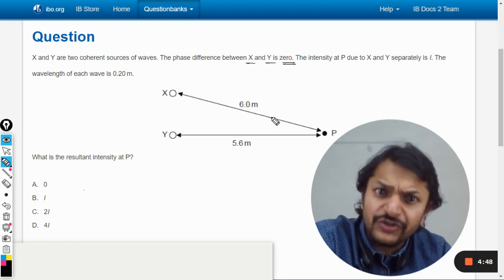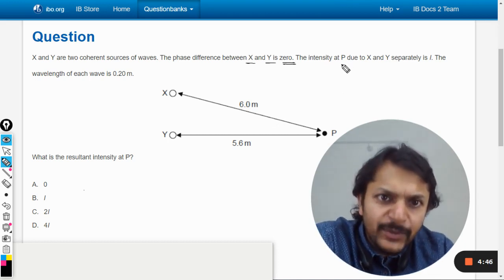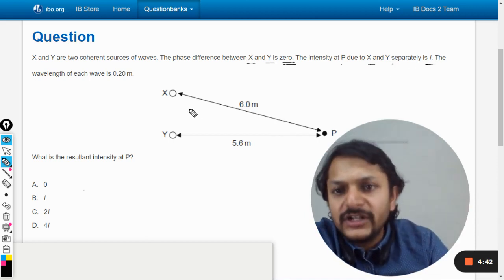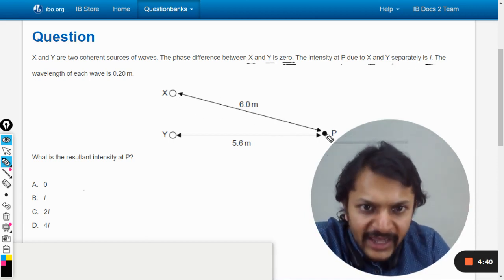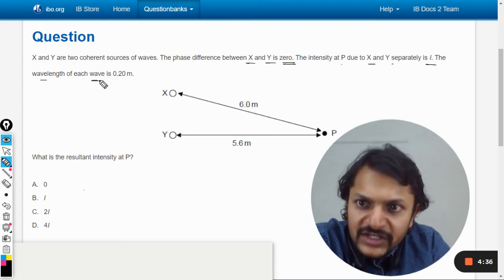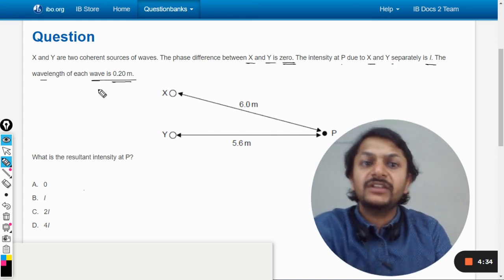Initial phase difference is 0 generally. The intensity at P due to X and Y separately is I. So the intensity of this wave will be I here. Intensity of this wave will also be I here. The wavelength of each wave is given by 0.2 meter. The wavelength is absolutely the same.